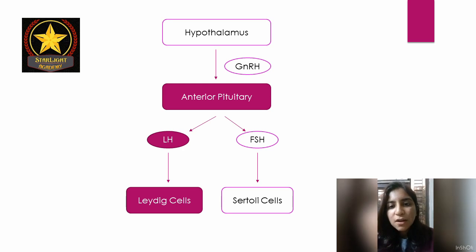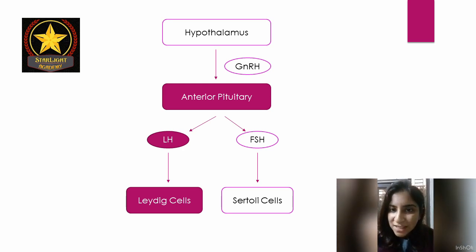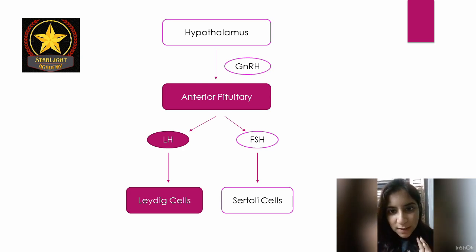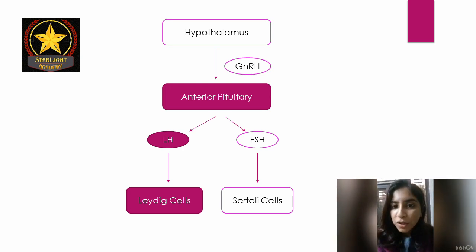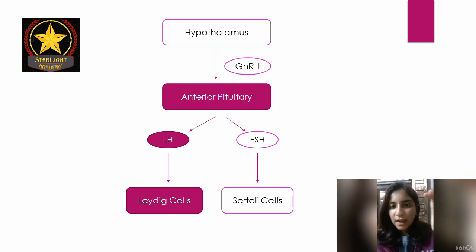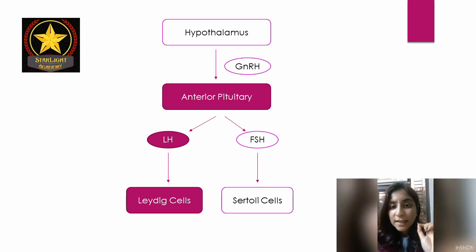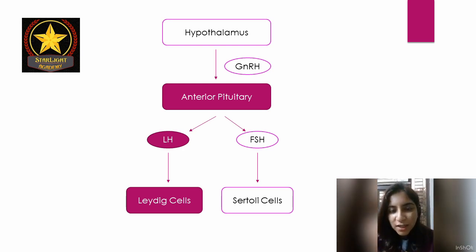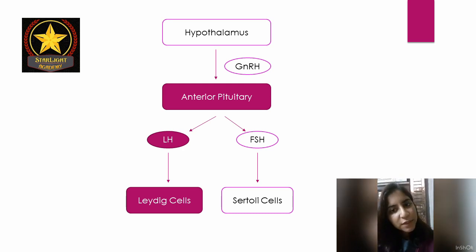LH is luteinizing hormone. LH goes and binds to interstitial cells called Leydig cells, which are present in the testes of human males. An easy way to remember this is L for LH, L for Leydig cells. LH stimulates Leydig cells to synthesize and secrete androgens — 'andro' meaning male-generating hormones — for example, testosterone.